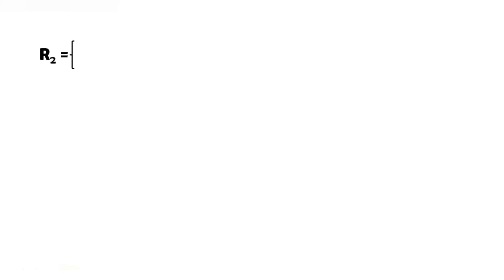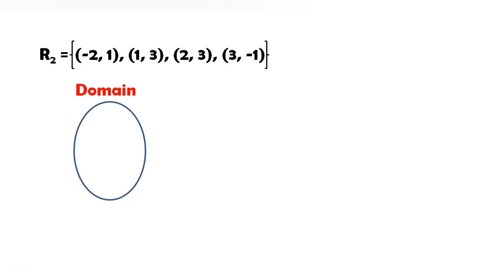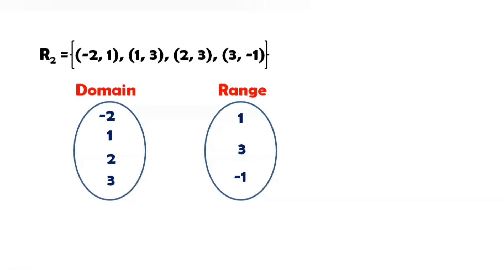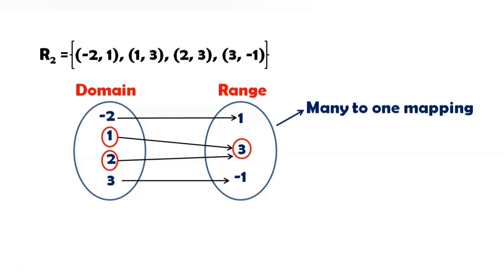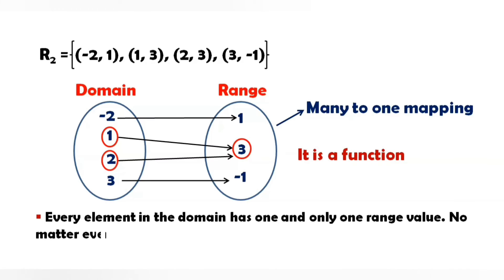Now let us consider another relation R3 = {(-2, 1), (1, 3), (2, 3), (3, -1)}. Let us show the mapping between the domain and the range. Minus 2 is mapped to 1, 1 is mapped to 3, and 2 is also mapped to 3, and 3 is mapped to minus 1. In this, 1 and 2 of set A have the same image 3 in set B. This type of mapping is called many-to-one. Think — is this a function or not? Yes, it is also a function because every element in the domain has one and only one range value, no matter even if it is the same image.